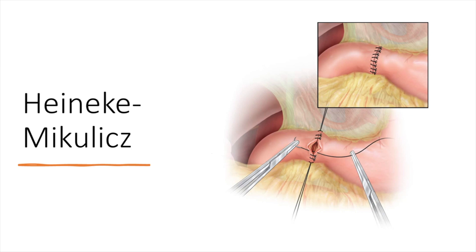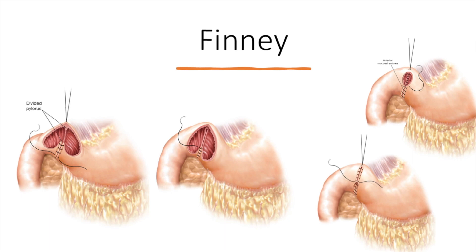Moving on to the second technique: the Finney pyloroplasty, also called the U-shaped pyloroplasty. The Heineke-Mikulicz is a great closure technique, but if a longer duodenum is required to obtain proper hemostasis on a bleeding source beyond the bulb of the duodenum, a Finney closure is more appropriate. Unlike the Heineke-Mikulicz, the Finney closure is a tension-free closure. Simply put, the Finney closure is a side-to-side gastroduodenostomy, making a connection between the stomach and the duodenum in which the pylorus is at the cranial apex of the anastomosis.